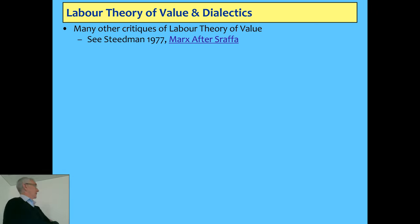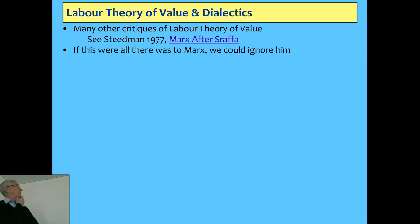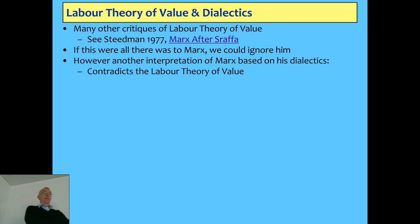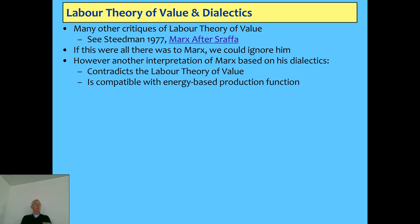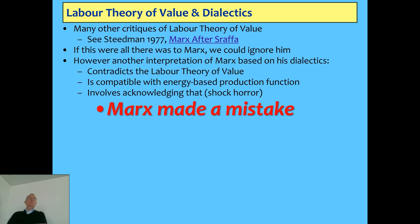There are many other critiques of labor theory of value. If you want the most detailed critique on the proportionality issues about rates of profit versus capital-labor ratios, take a look at the book by Steedman, Marx after Sraffa. But there's another interpretation of Marx based on dialectics which contradicts the labor theory of value and is compatible with this energy production function. It involves acknowledging something highly unlikely: Marx made a mistake. And I think he knew he made a mistake.